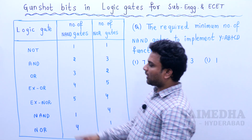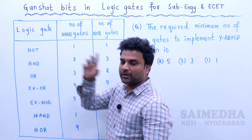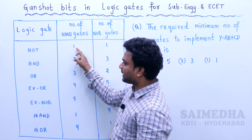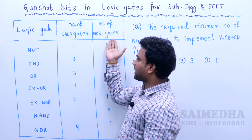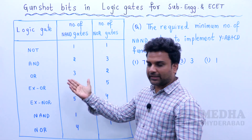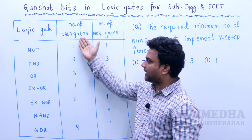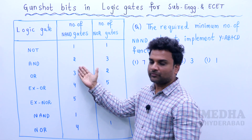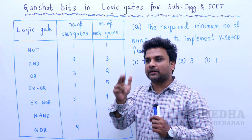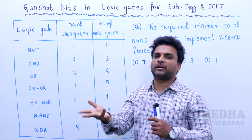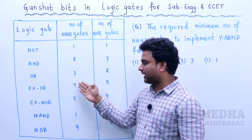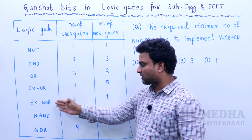When you design using NAND gates — you have a number of NAND gates. NAND gate plus NAND gate: two NAND gates become AND. OR gate requires 3 NAND gates. XOR gate requires 4 NAND gates. XNOR gate requires 5 NAND gates. NAND gate itself requires 1 NAND gate.